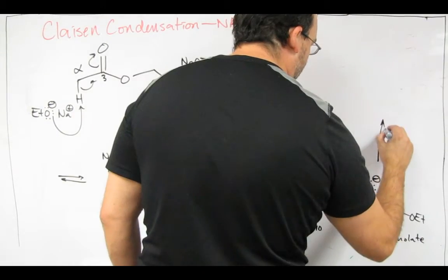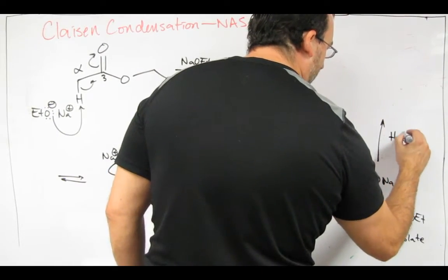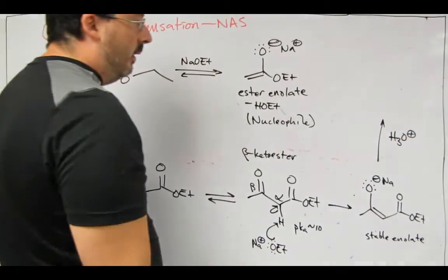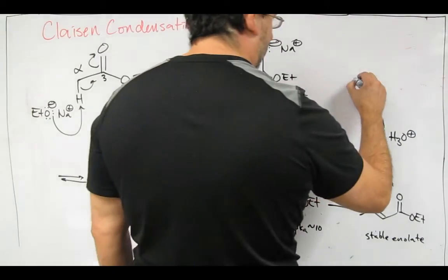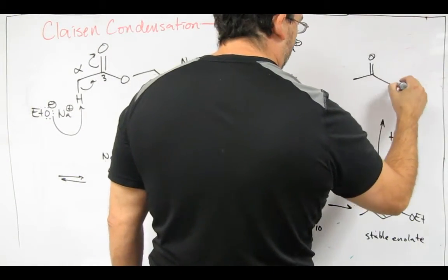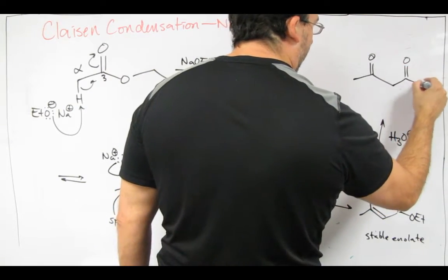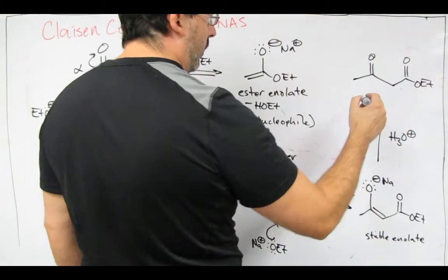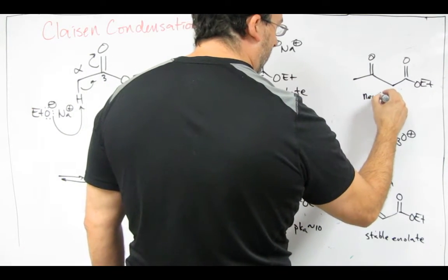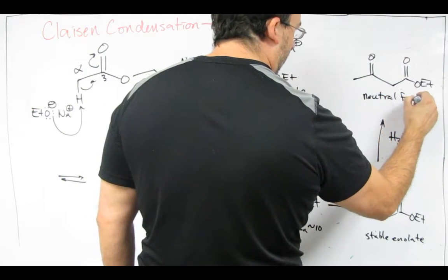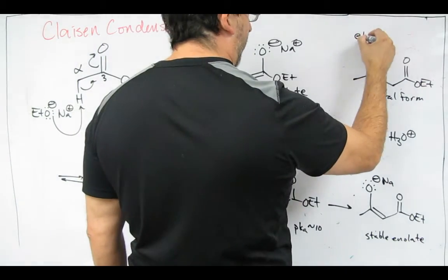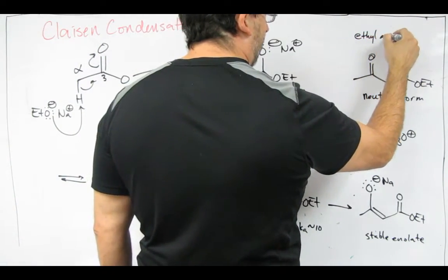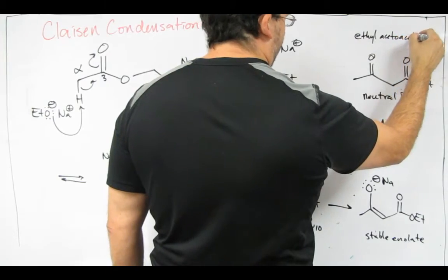So the reaction sits here. We then do an aqueous acidic workup. Hydronium ion, that's going to drop the pH from basic to acidic, which will allow us to isolate the neutral form of this molecule, which we've seen before, is ethyl acetoacetate.